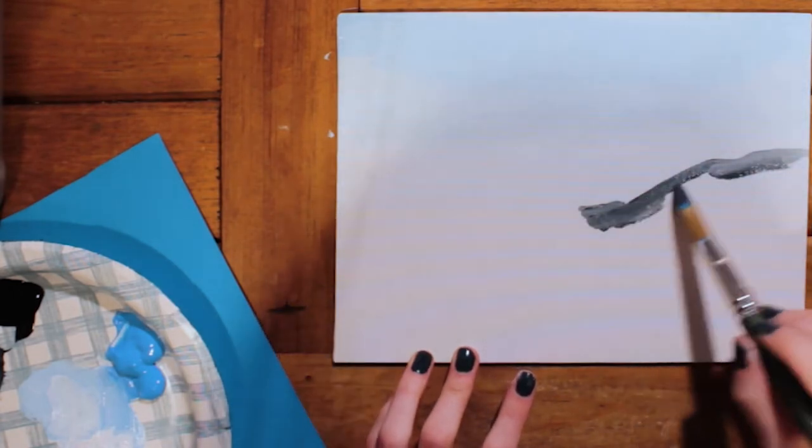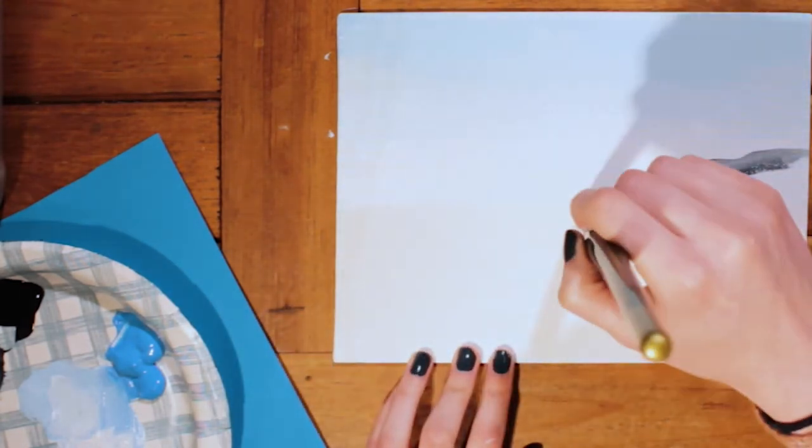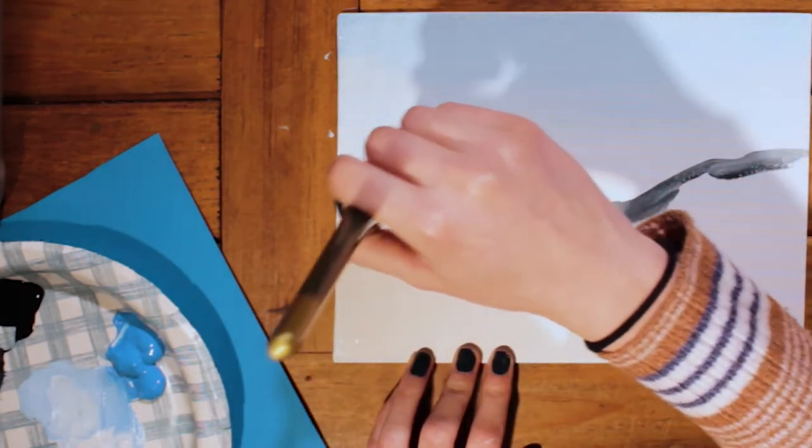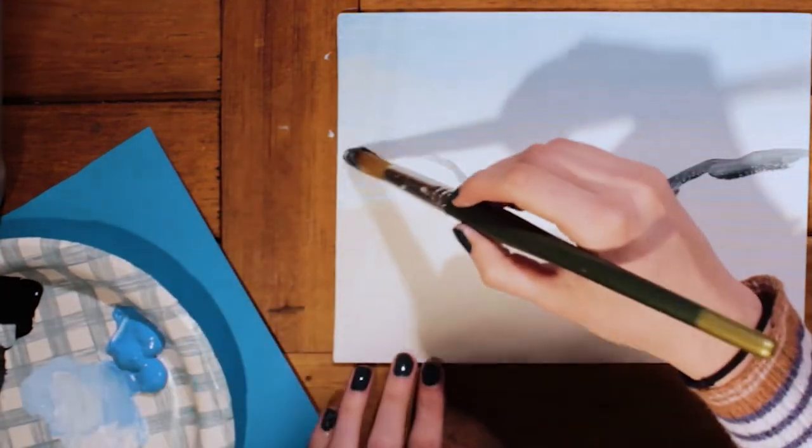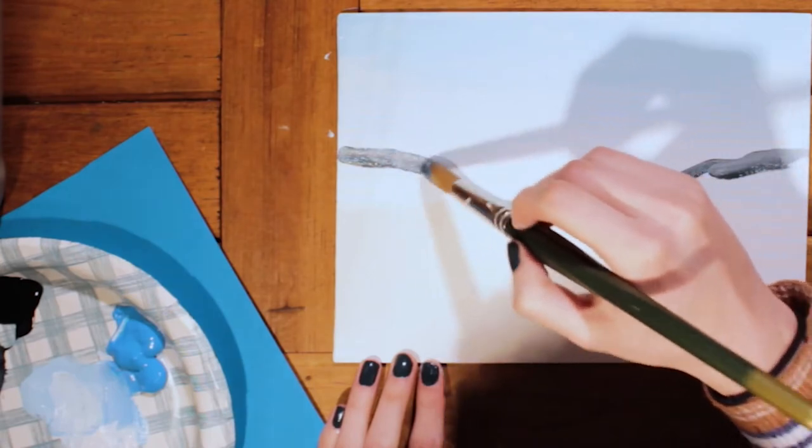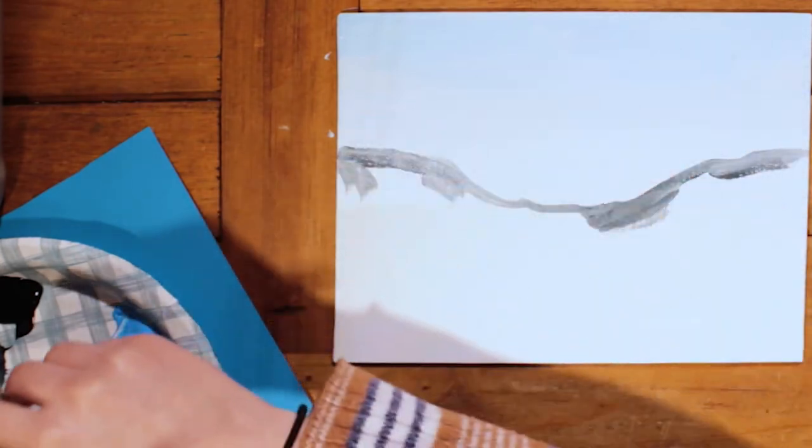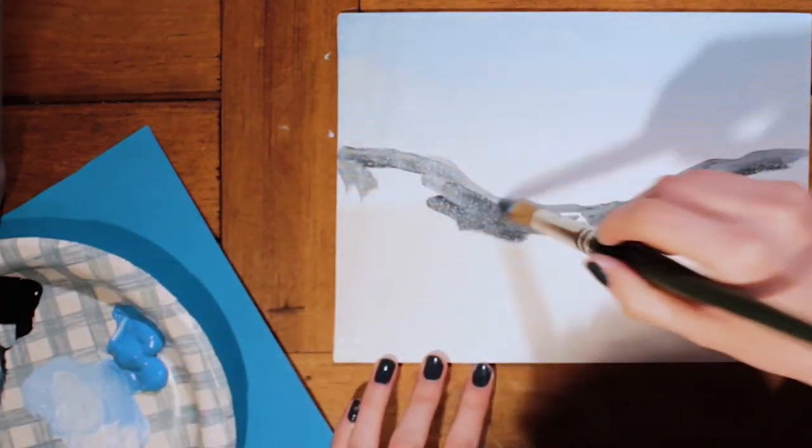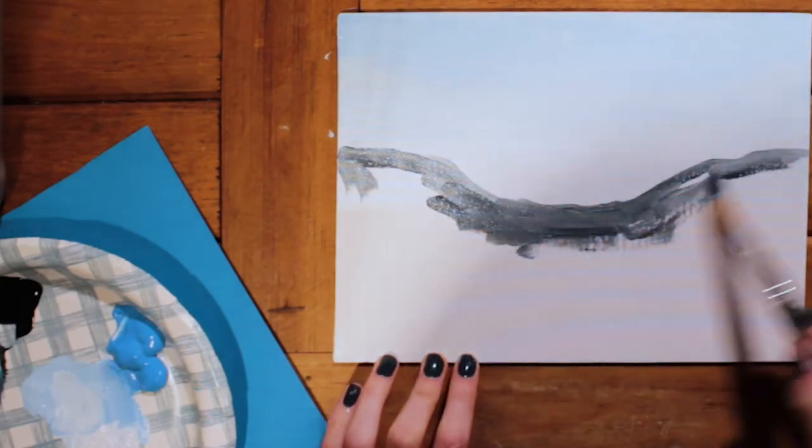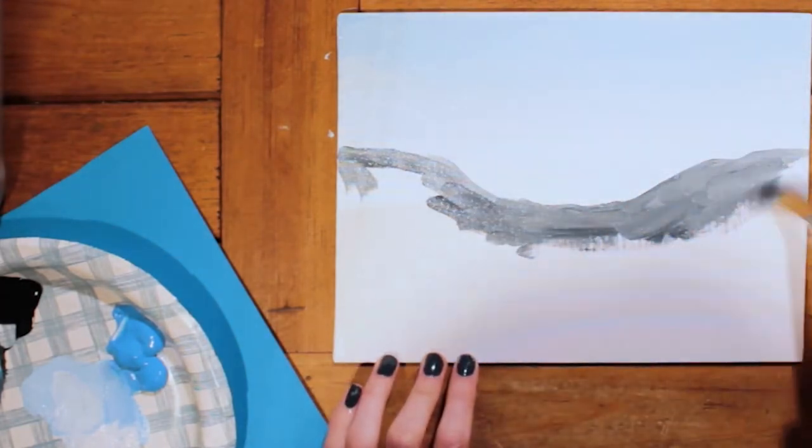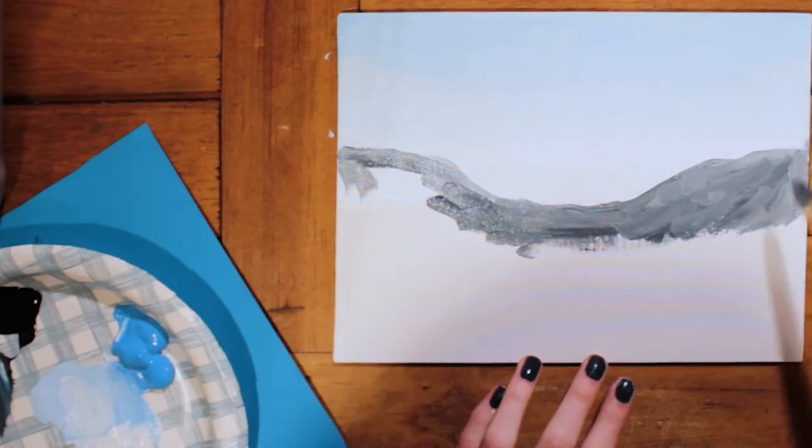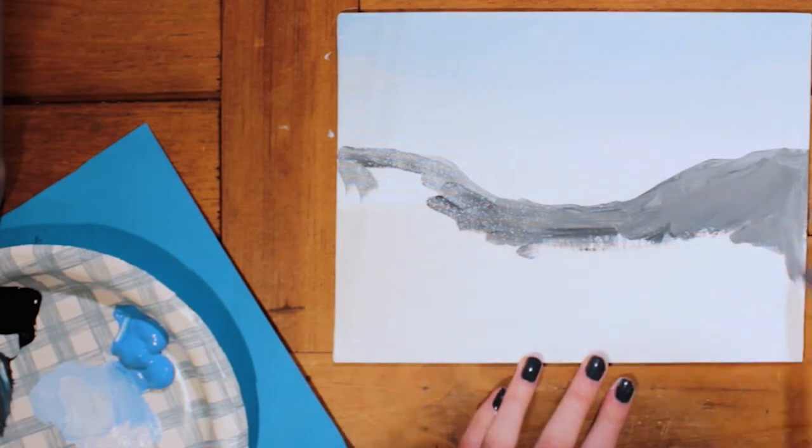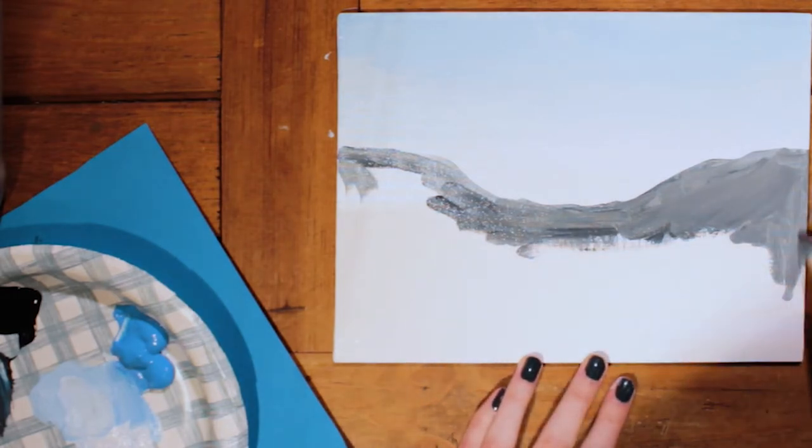You want to kind of start where you stop with your sky. If you want it to look a little more bumpy, you can do some rougher short strokes. Or you can do it smooth if you want it to look that way.